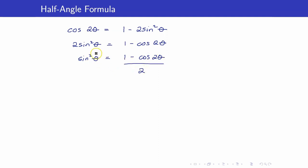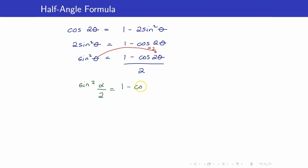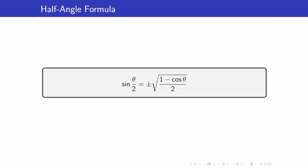Notice the angle here — on the left side we have theta, and on the right side we have 2 theta. So the angle got multiplied by 2. Suppose that instead of theta, we use alpha over 2. Then on the right side, alpha over 2 will become alpha — it gets multiplied by 2. This gives us our half-angle formula.